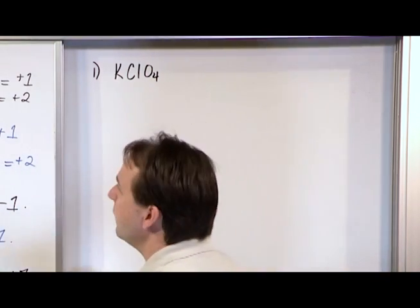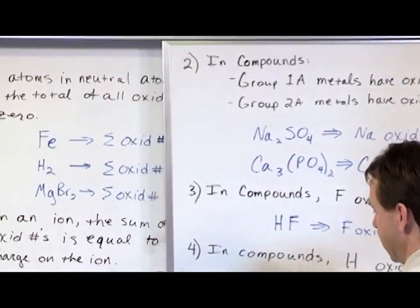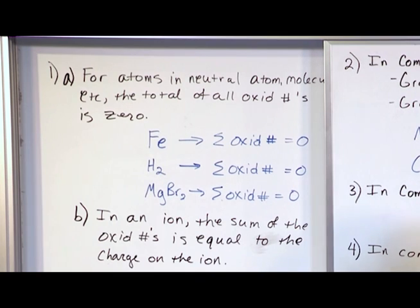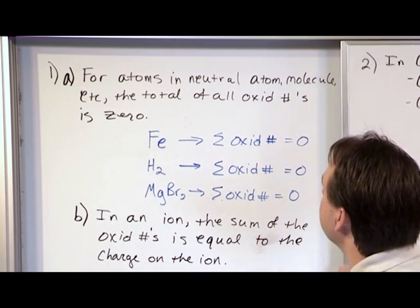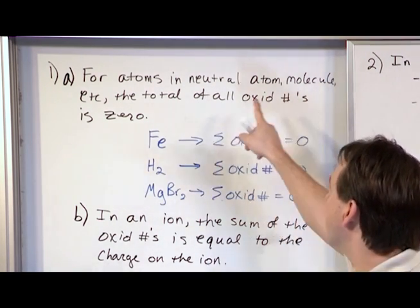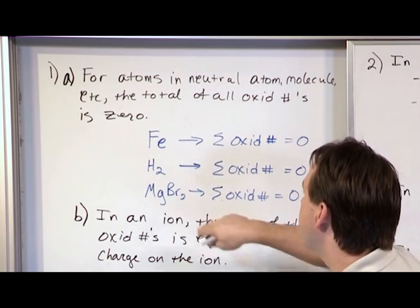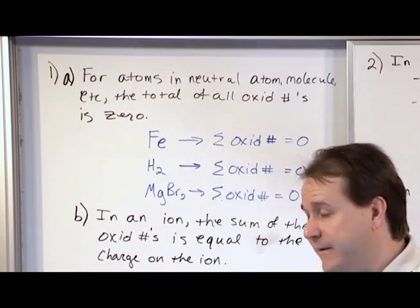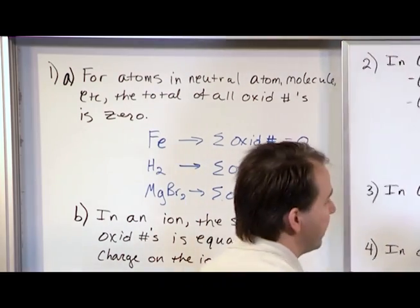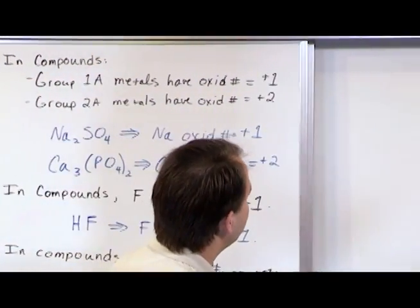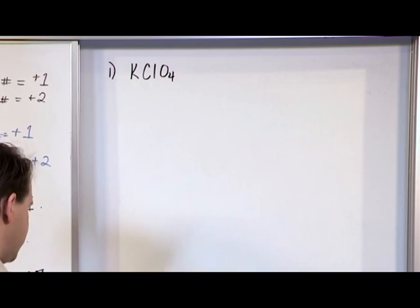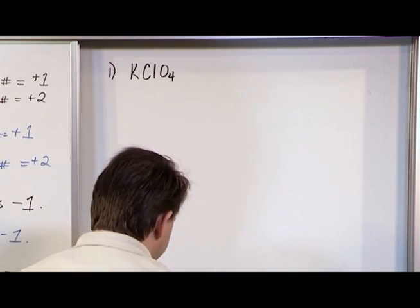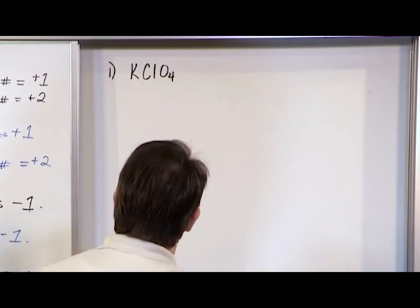So the very first thing we do is we go and we look at the priority order. Rule number one says for atoms in neutral molecules, the sum of the oxidation numbers has to be zero. And rule number one applies here. In fact, rule number one is always going to apply because we're almost always going to have neutral atoms here.